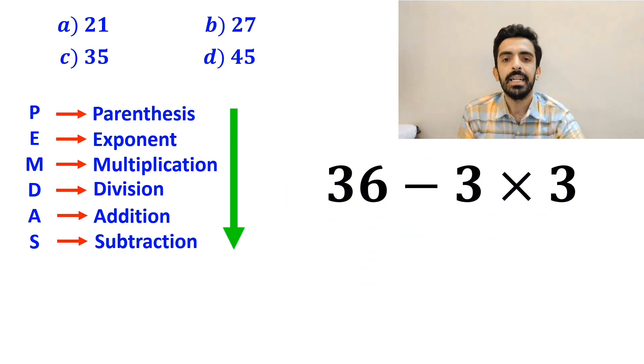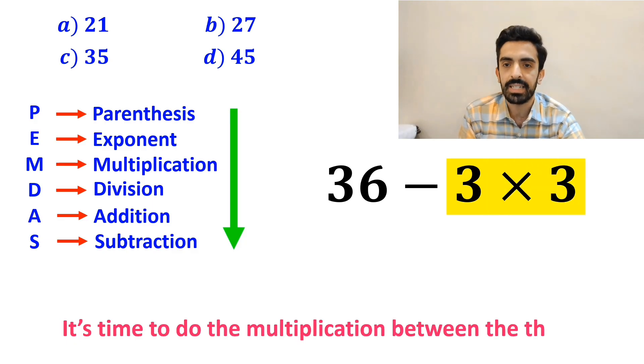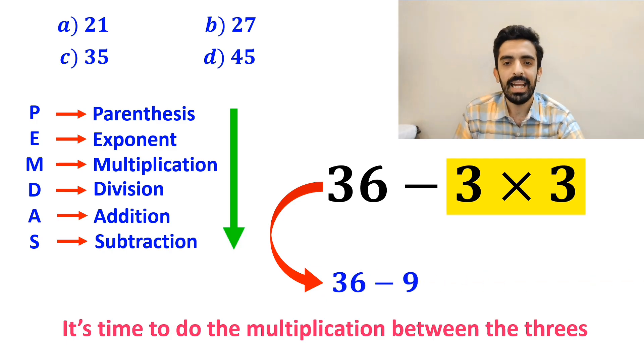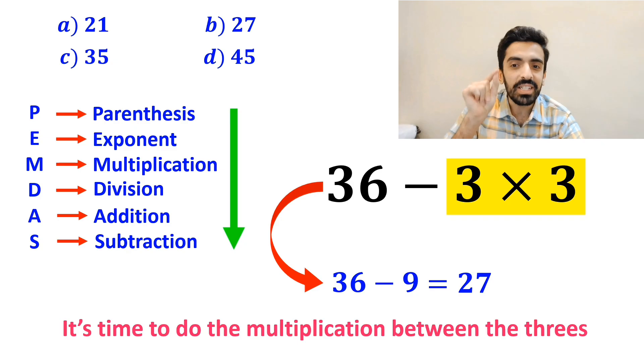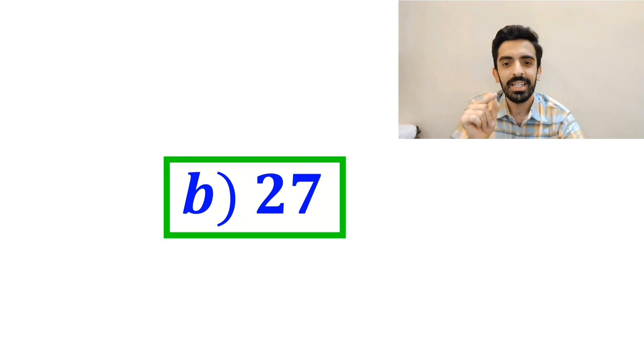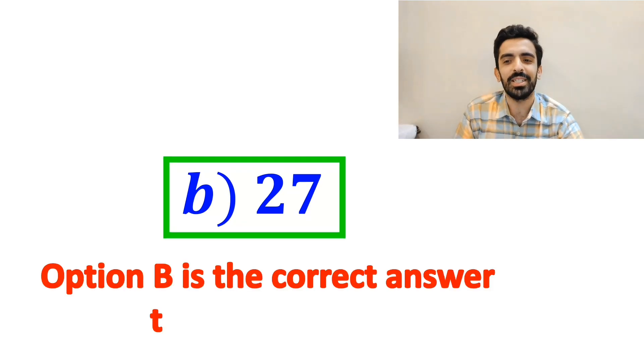Now it is time to do the multiplication between the 3's, which gives us 36 minus 9. And finally, the value of this expression is equal to 27. So, option B is the correct answer to this question.